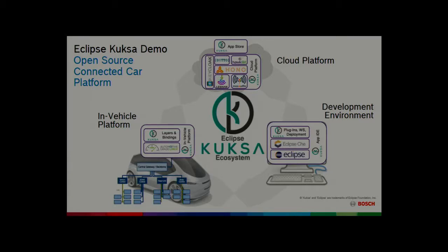You have three parts: the cloud platform that you need — Benjamin has already talked about the Eclipse IoT components available there. Then you need something in the car. Typically Java is not that well-liked in the car, so that's why we use Automotive Grade Linux, which runs without Java. And then of course you need a development environment, and for that we used Eclipse Che.